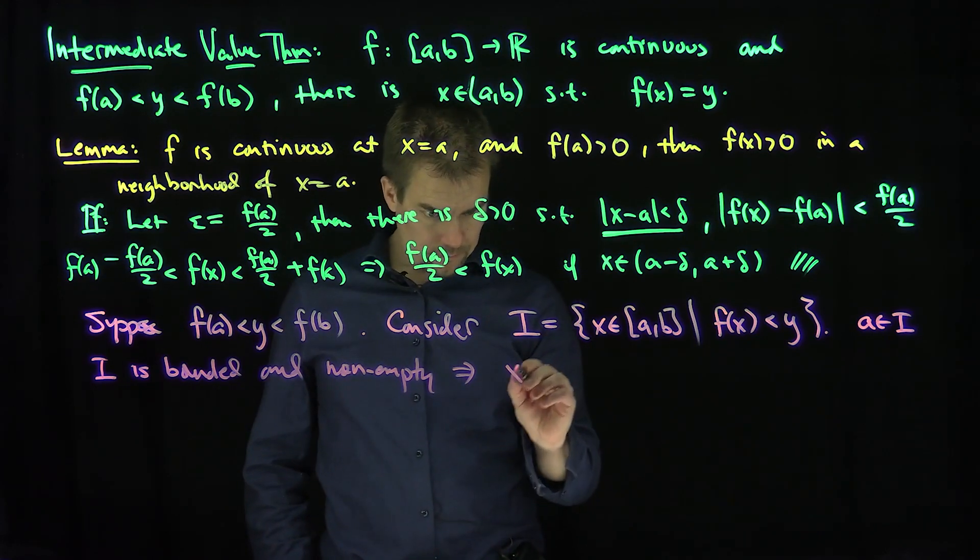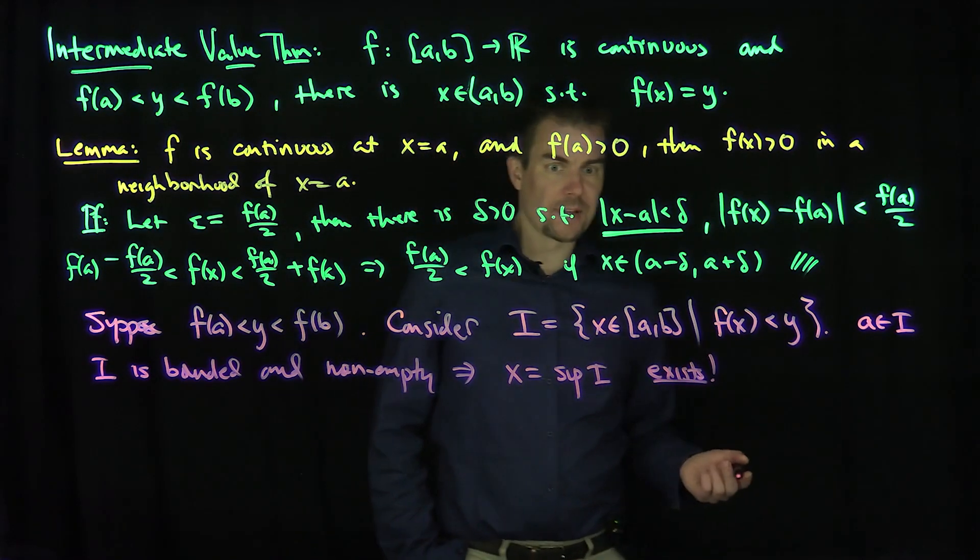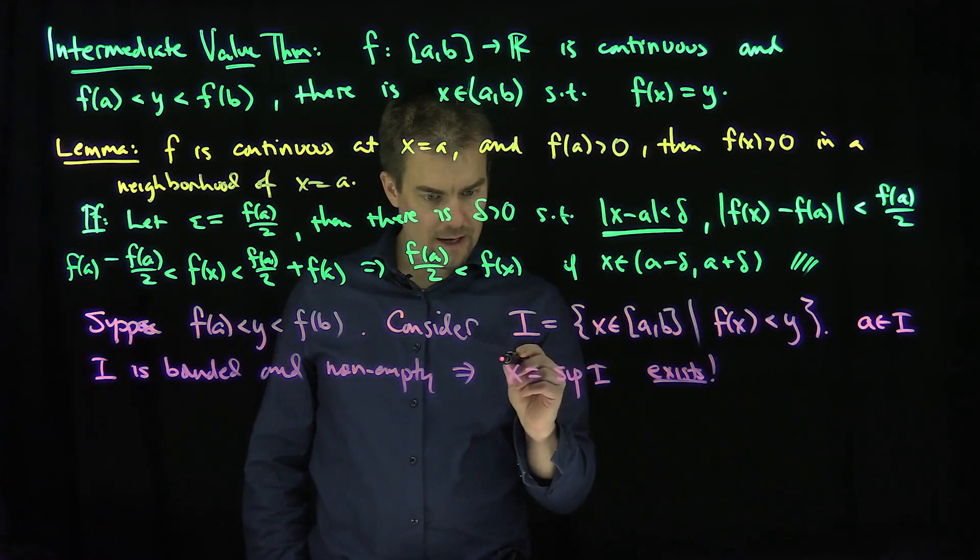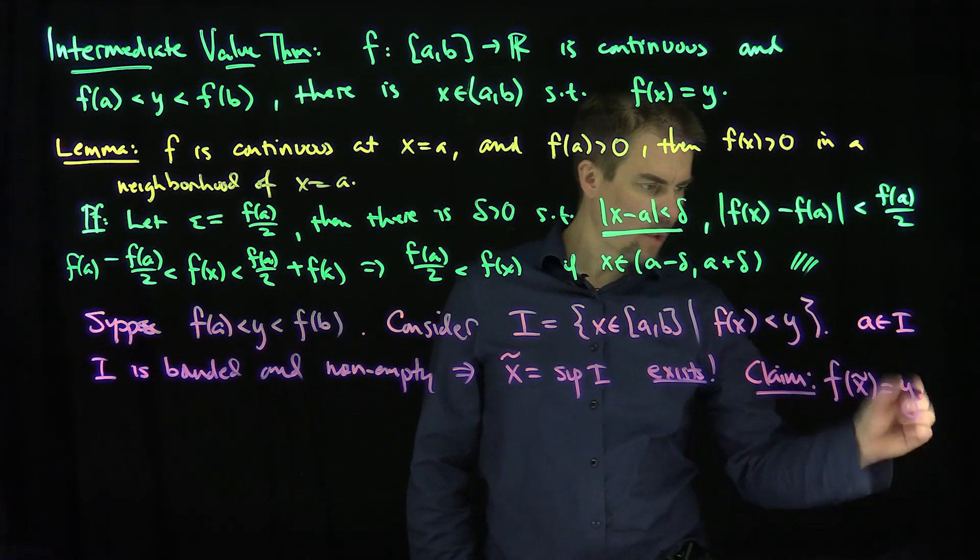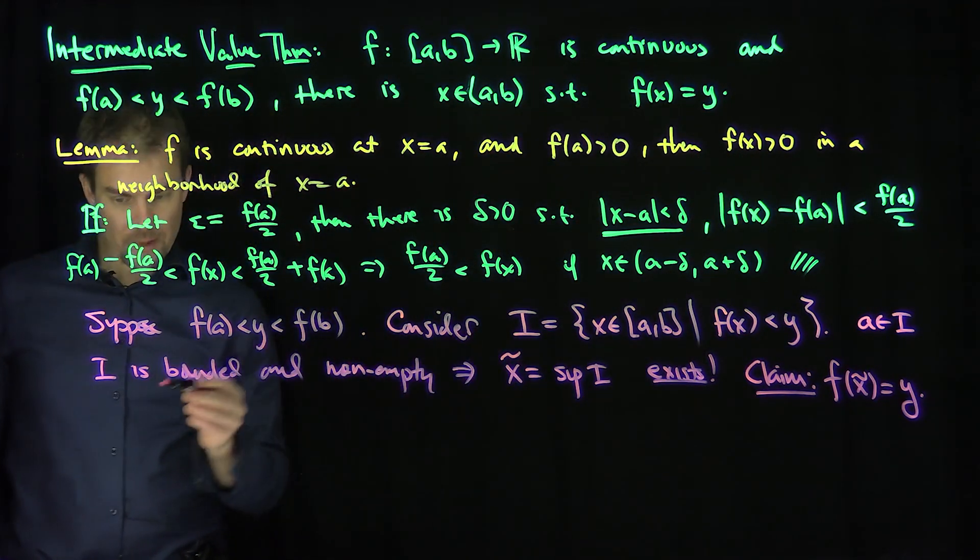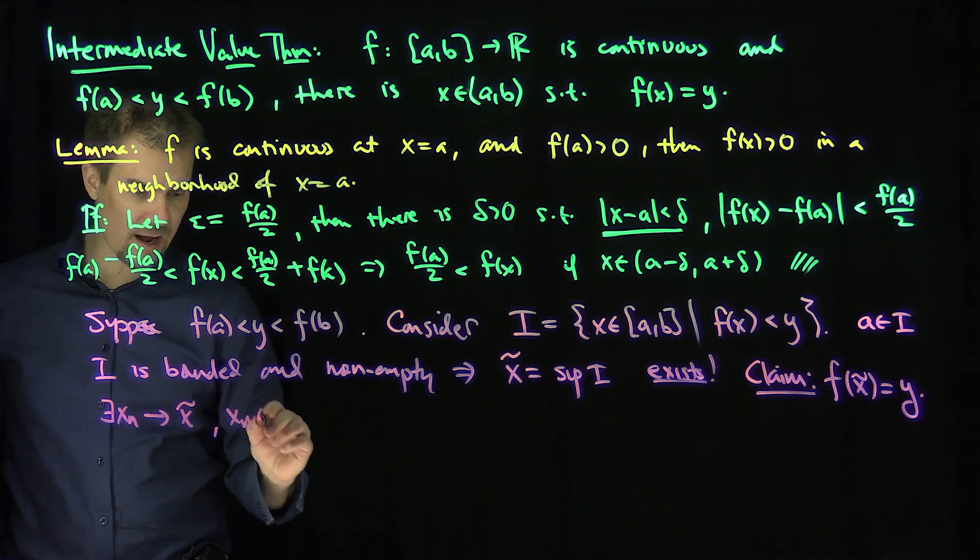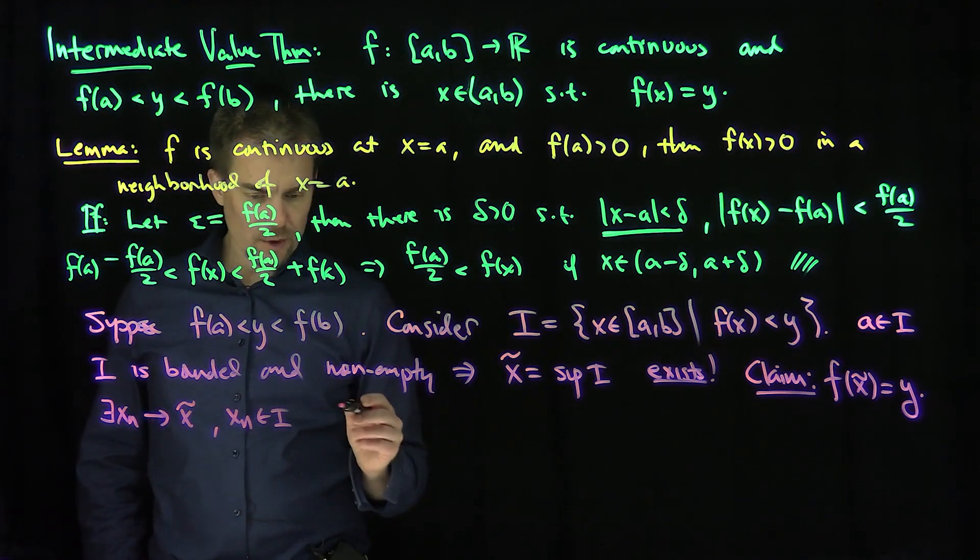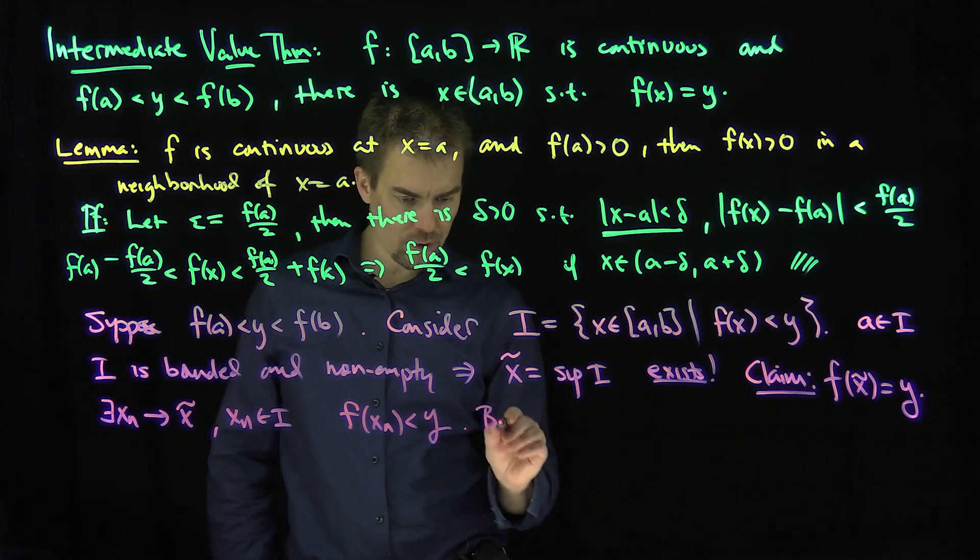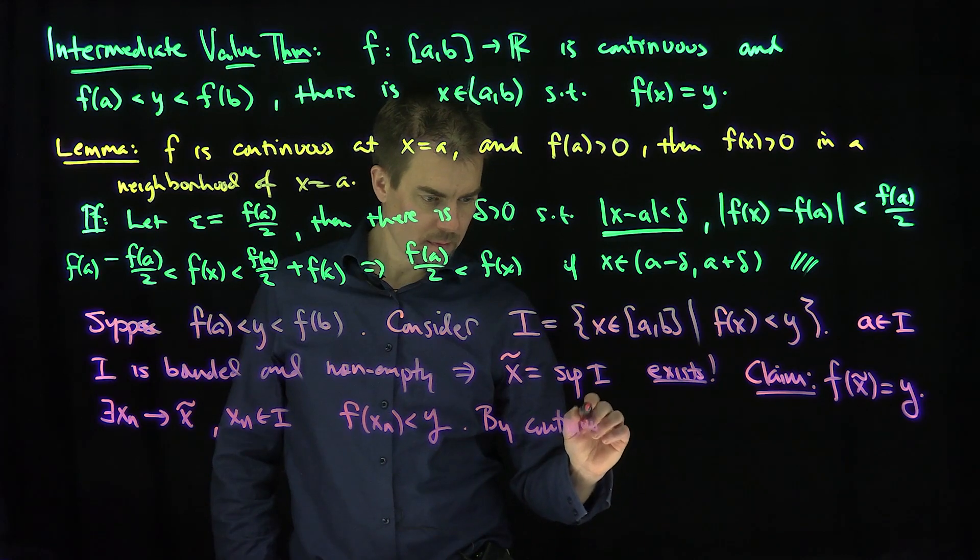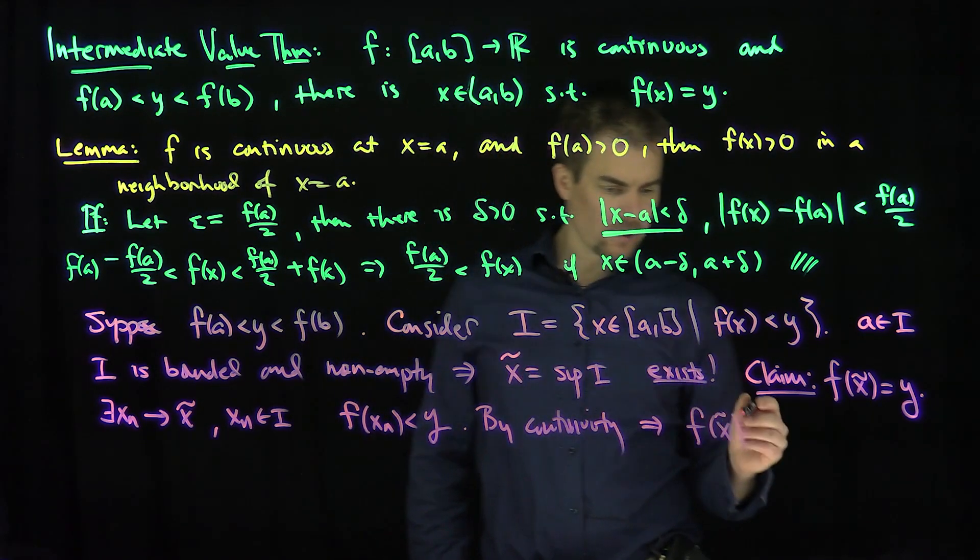That means we can consider the number x tilde, which is the supremum of I. This number x tilde exists. My claim is that f(x tilde) equals y. Since it's the supremum, there exists a sequence x_n that converges to x tilde with x_n in the set I. So f(x_n) is strictly less than y, and by continuity, I can pass to the limit, which says that f(x tilde) is less than or equal to y.